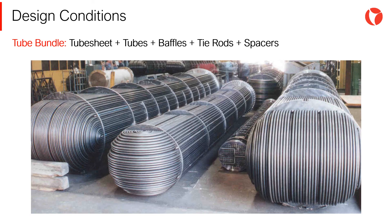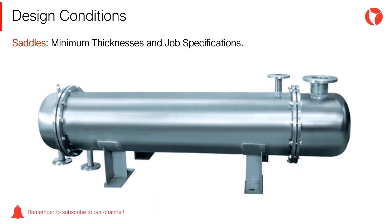The weight of the tube bundle is one of the most significant weights for this type of equipment. The weight of the following components must be defined: tube sheets, tubes, baffles, tie rods, spacers, etc. Vessel supports are one of the last elements designed in a pressure vessel, because in order to select the thickness of the supporting elements, all the loads acting on the vessel must first be known. The weight of the supports is estimated according to minimum thicknesses and job specifications.